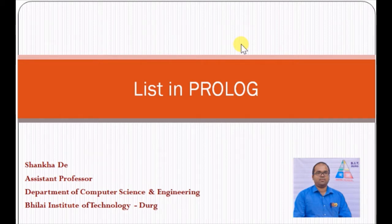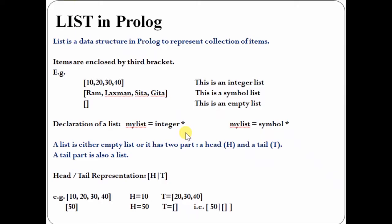Today we will discuss what is a list in Prolog. A list is a data structure in Prolog to represent a collection of items. The items are enclosed by third brackets.